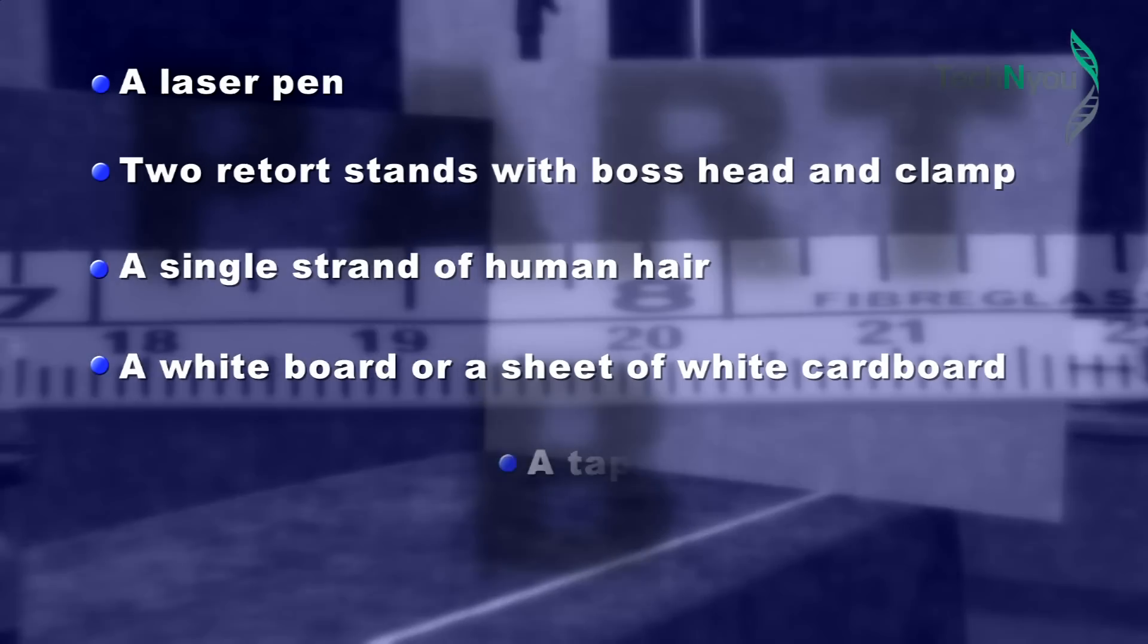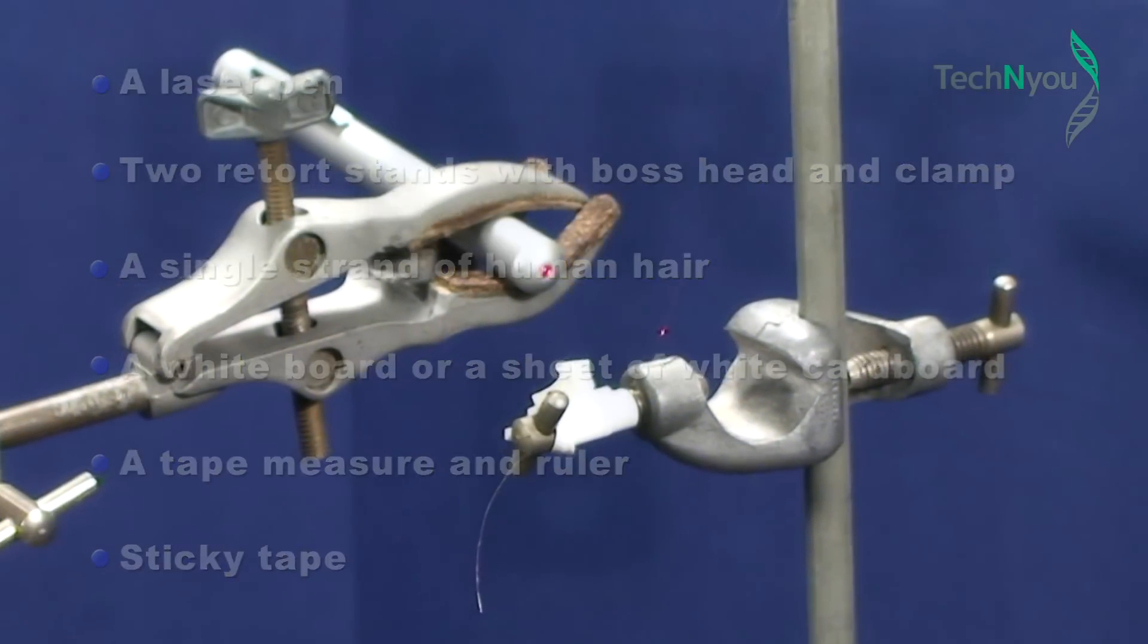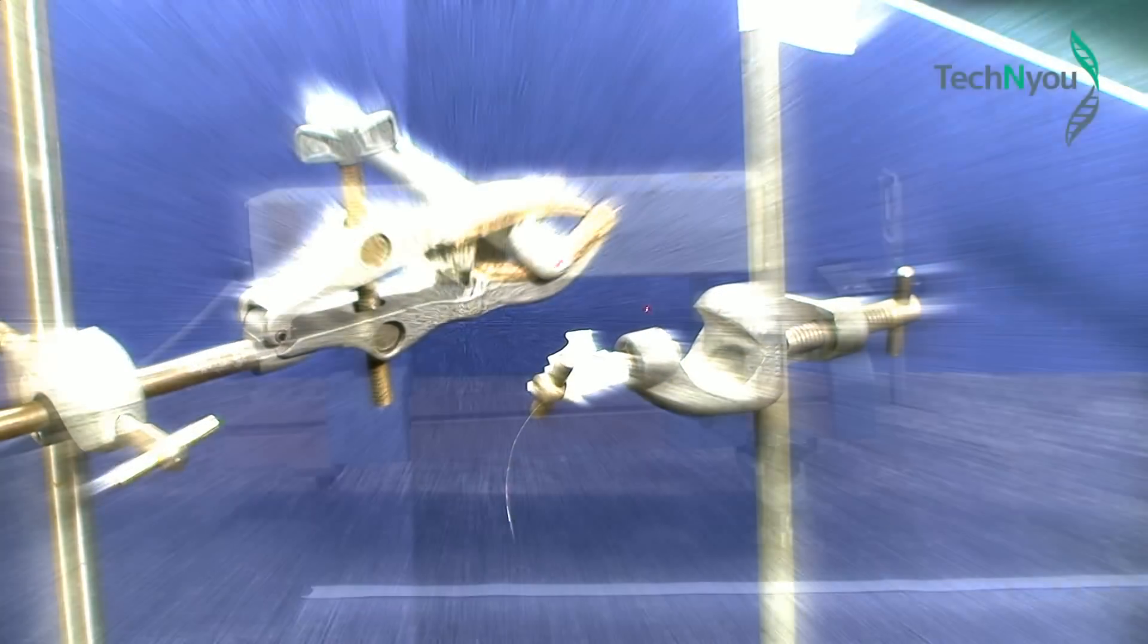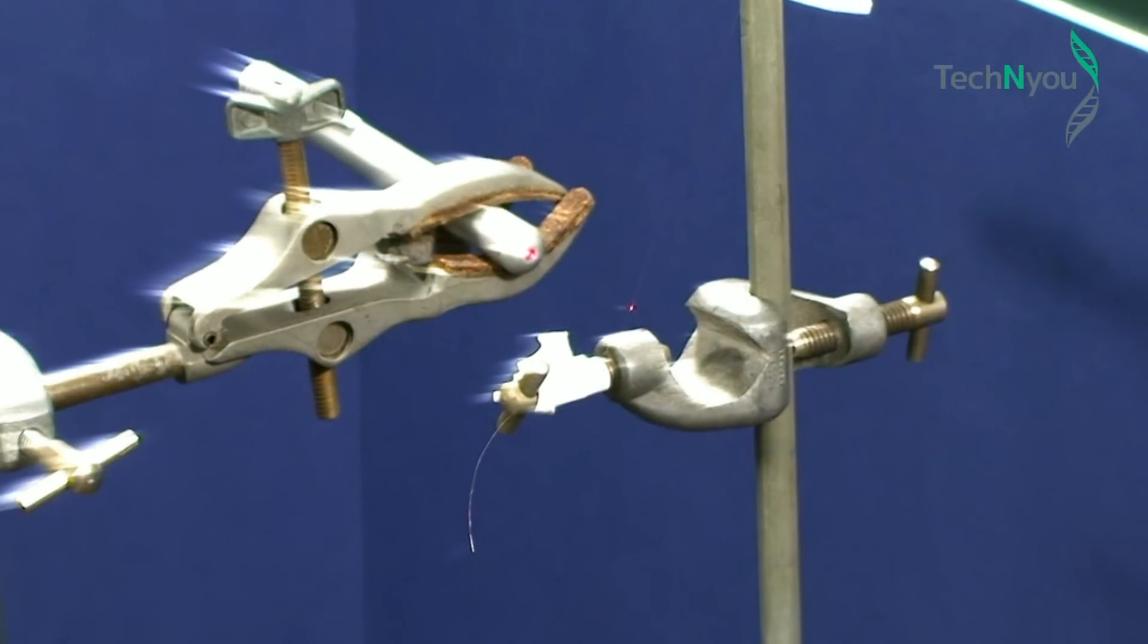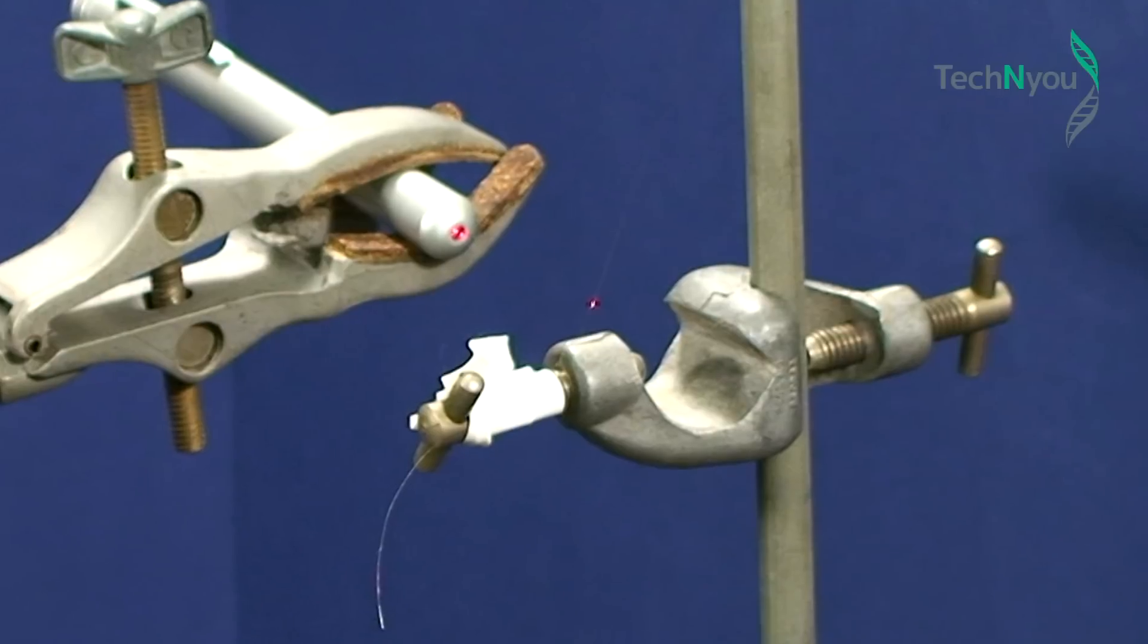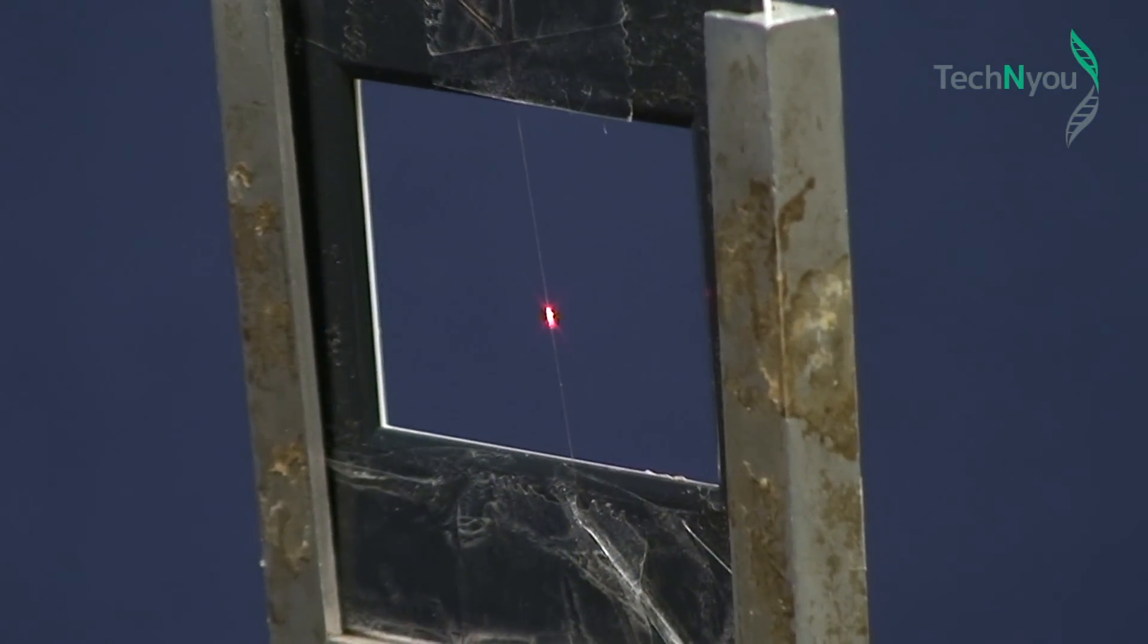The experiment is in two parts. We use one technique but two different sets of equipment to project a red laser beam past a single strand of human hair suspended in a slide frame.